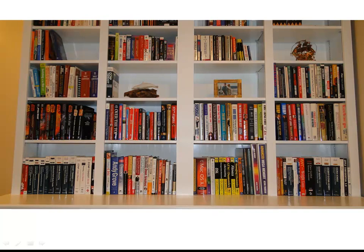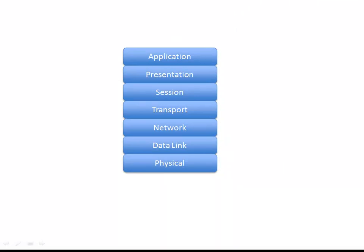Welcome back everyone, it's Kevin. In our last video I took you to my bookshelf and explained how it could be used as a metaphor for the OSI model. The OSI model consists of seven different layers, remembered with the acrostic 'please do not throw sausage pizza away.' Just like the bookshelf organized different types of books, we organize different protocols and standards into the different layers. Over the next few videos we want to dissect this model and look at the different layers.